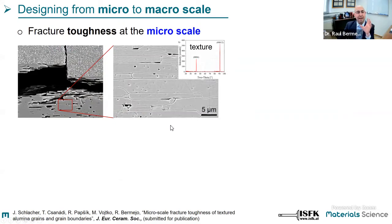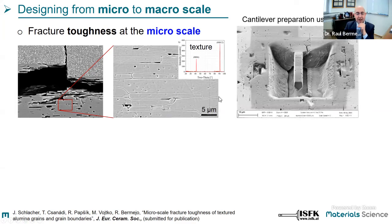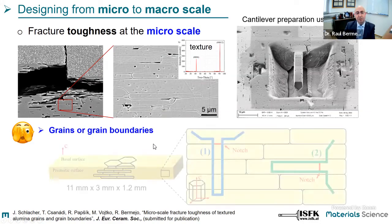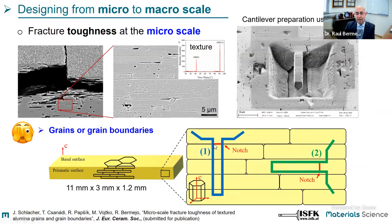We wanted to understand at the micro scale how to quantify how tough the platelet or grain boundary between platelets could be in comparison to the fracture toughness of a single grain. It is easy to say but tedious to make. In collaboration with the Slovak Academy of Sciences with Thomas Csanádi, we used focused ion beam milling to fabricate cantilevers and then tested them in the microscope. From this textured microstructure we essentially flip out one cantilever and perform a single edge V-notch test. The natural question is whether you are notching at the grain boundaries or inside the grain, so we did both.